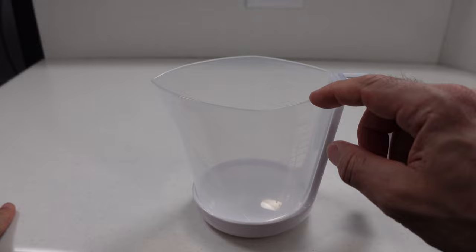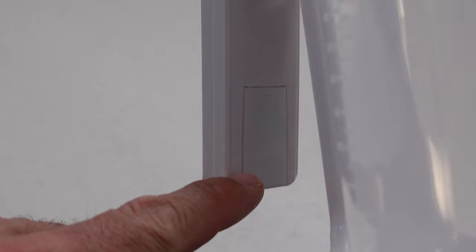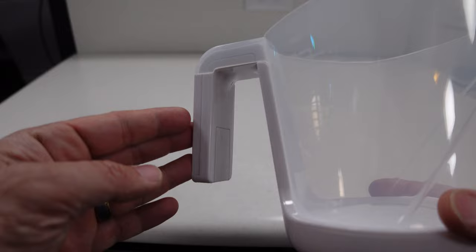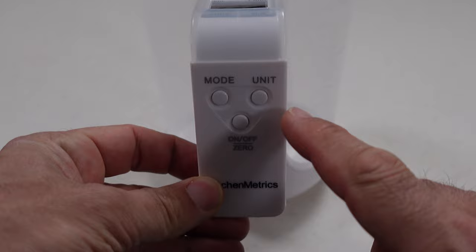The scale has a CR2032 battery that goes into this door right here, and one actually comes with the scale, so that's nice instead of making us go out and buy one ourselves. And your actual controls on the scale are just three buttons here and an LCD screen on the top.